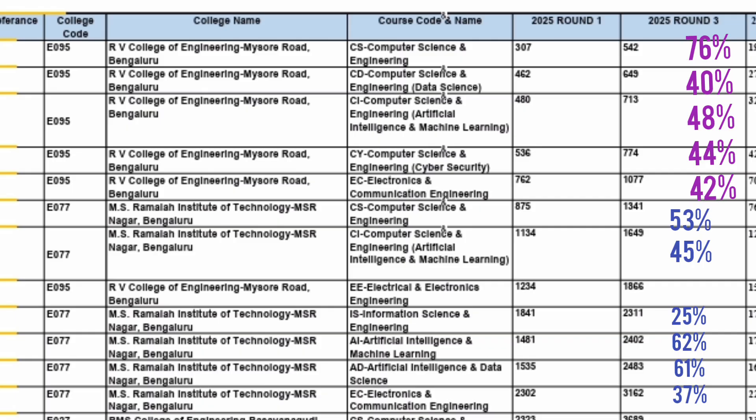The first thing is that you should understand the trend — how the cutoff has moved. I will show you the trends of the top colleges so you can check for your own college. The table shows college name, course name, the 2025 round 1 cutoff, and the 2025 round 3 cutoff.